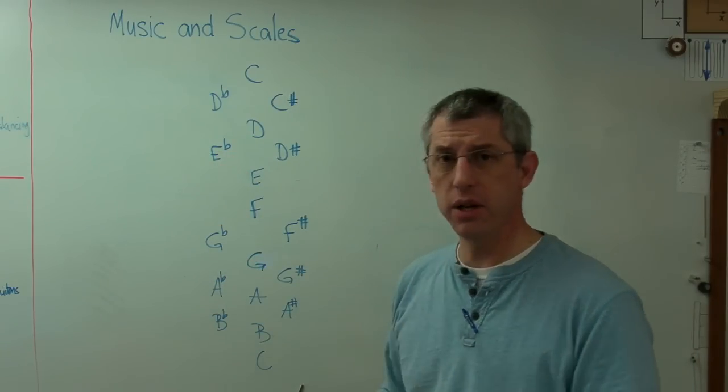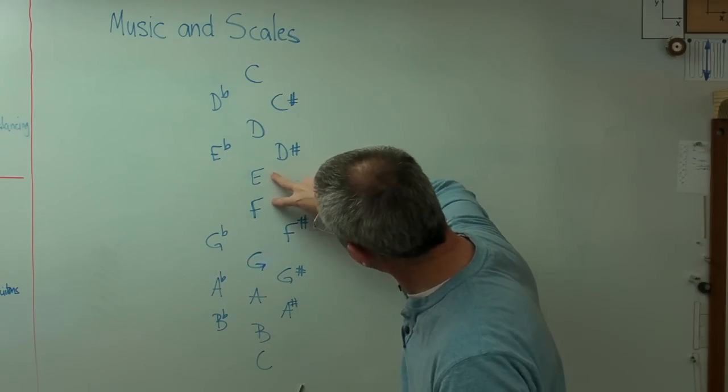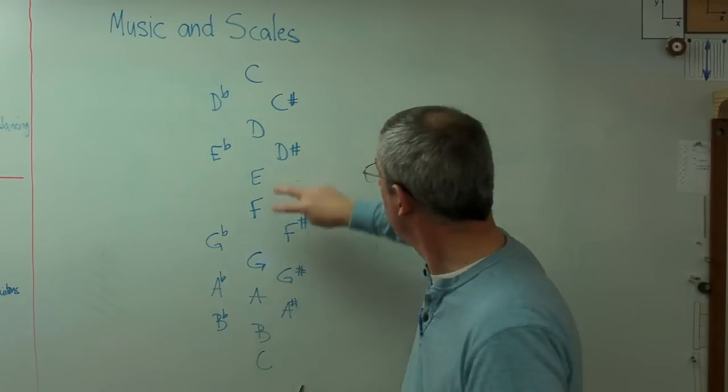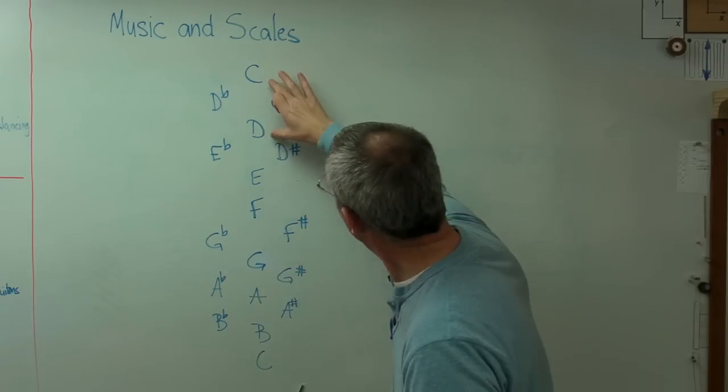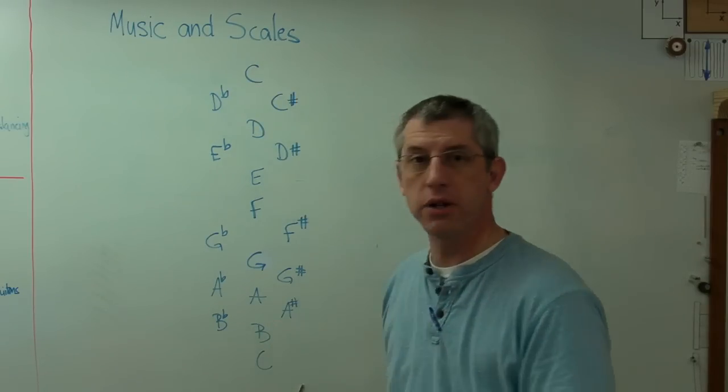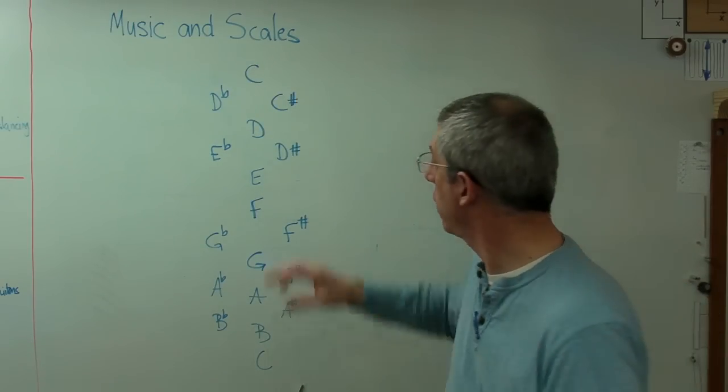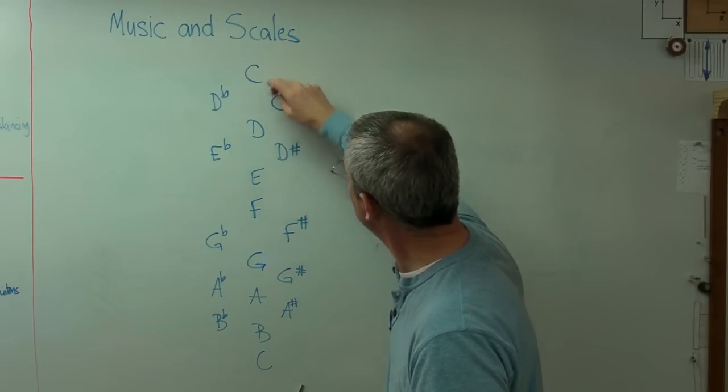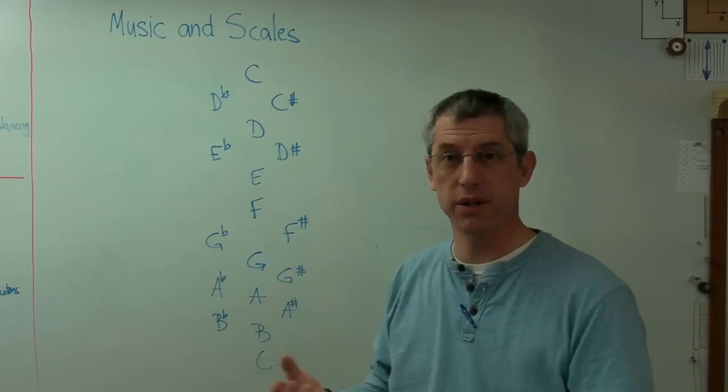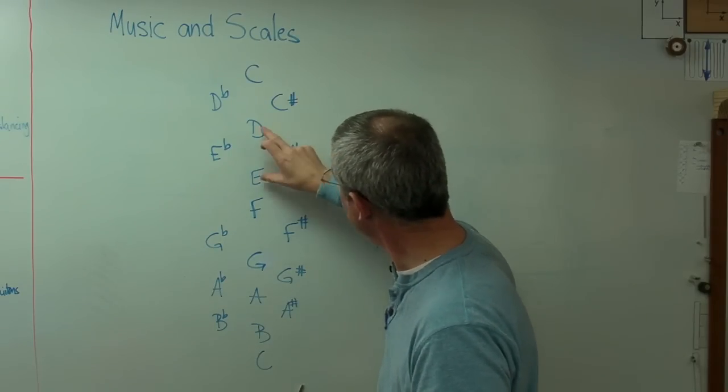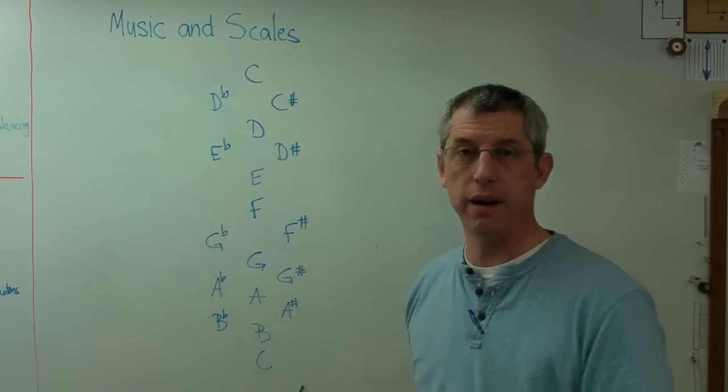One last thing to note is there's no note in between E and F or between B and C. These are a half-step apart, and these are a half-step apart. Whereas all the other, what are called natural notes that don't have a sharp or a flat on them, those are all a whole step apart. So C, C-sharp, D. Well, that's two half-steps. That's a whole step. D, D-sharp, E. That's a whole step made of two half-steps.